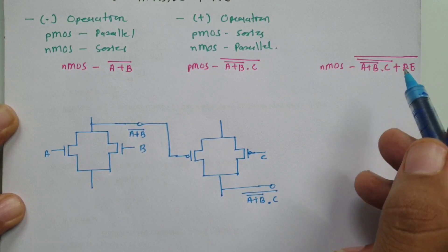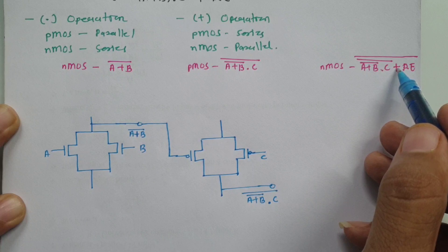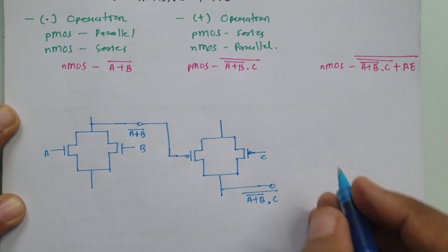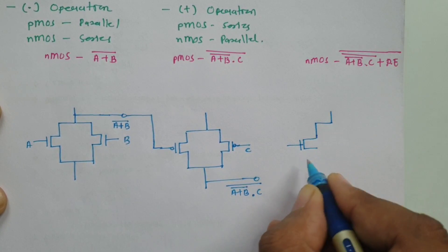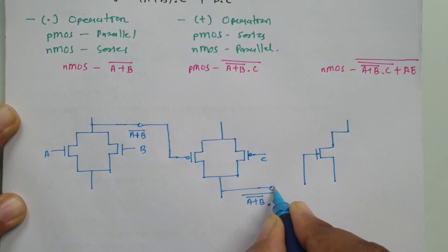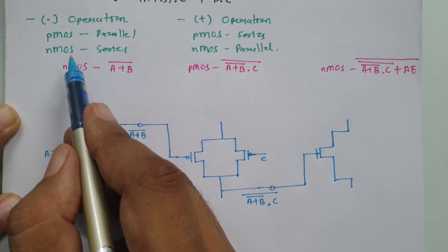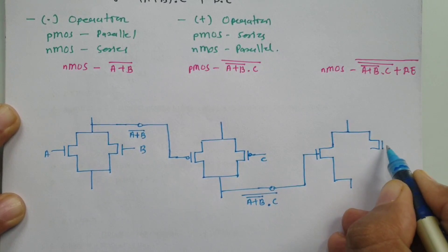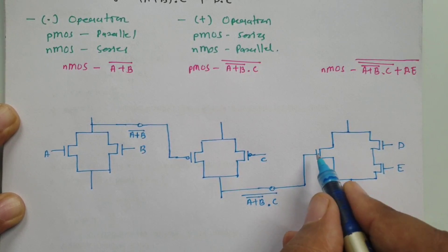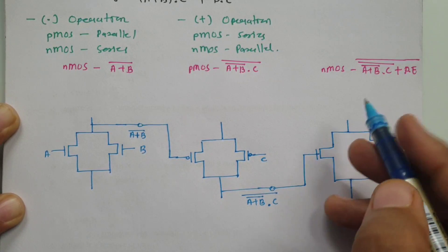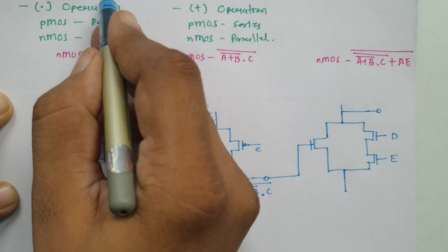After that we have the third NMOS block. We already have (a + b) bar dot c bar, and after that there is a plus operation. For NMOS block, plus means parallel. So we have an NMOS connected with that signal, and in parallel with it we have d dot e. For d dot e, NMOS is in series, so d and e are in series with each other and this combination is in parallel with the previous signal. The output y is taken from the upper terminal of this NMOS block.